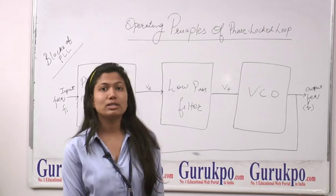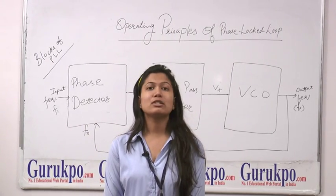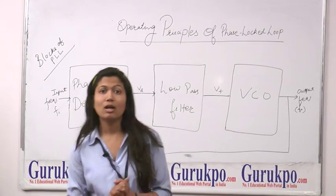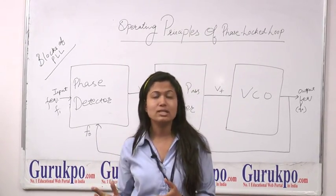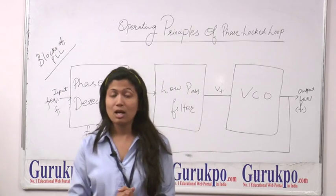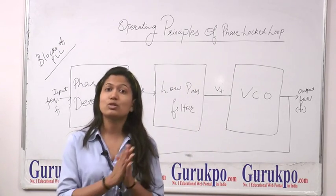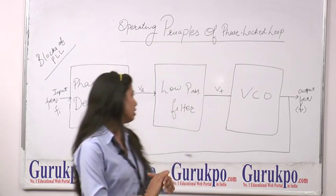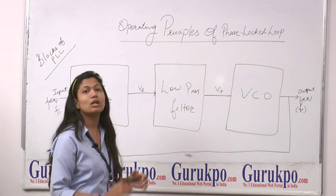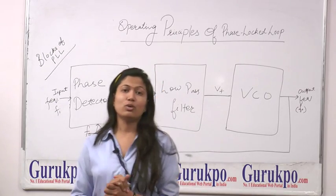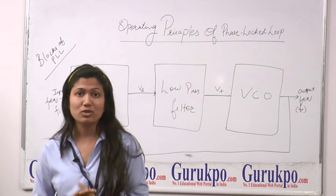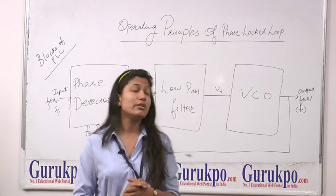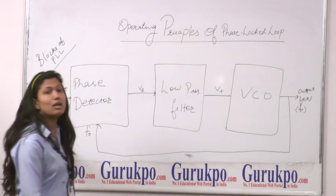First of all, I will tell you what is a Phase Locked Loop. A Phase Locked Loop is a circuit which generates a frequency, and it detects the difference between the input frequency and output frequency, correcting the output frequency so as to synchronize or lock it to the input frequency. In other words, a Phase Locked Loop generates a signal whose phase relation is the same as the reference signal, that is, the input frequency.